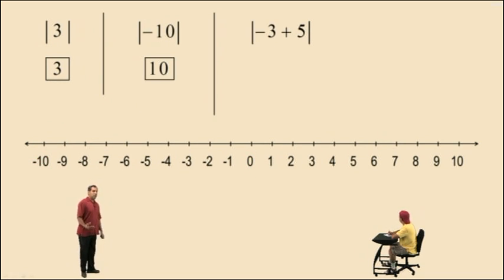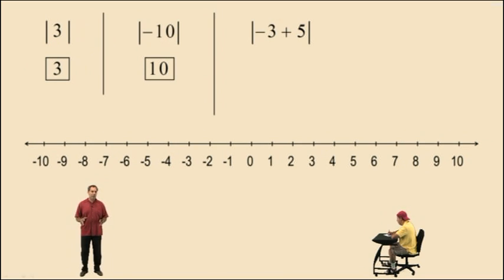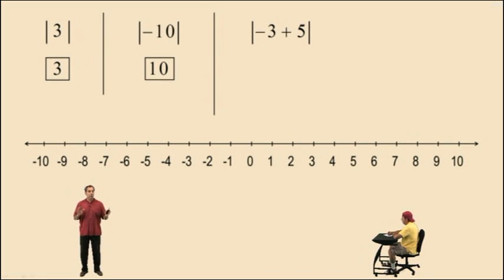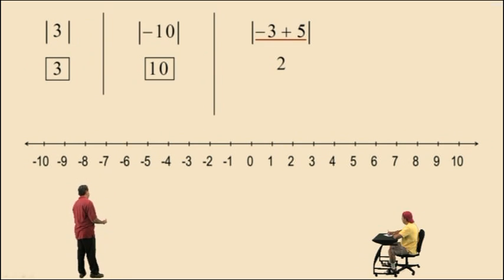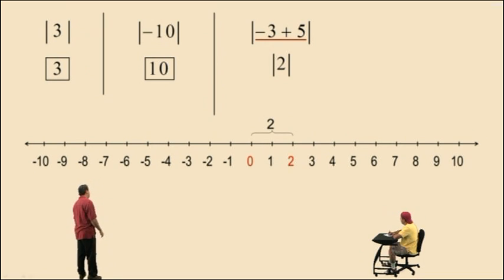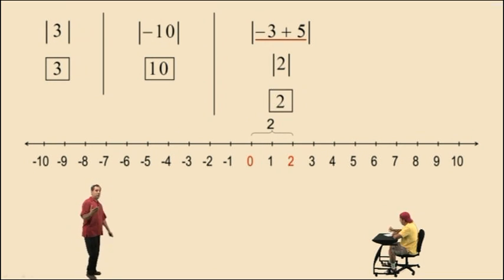Here we have the absolute value of the expression negative 3 plus 5. Earlier in the semester we were talking about order of operations, and the first category was parentheses and other grouping symbols. Absolute values fall in that first category — you treat them as parentheses. So we have to simplify the expression within the absolute value first. Negative 3 plus 5 is positive 2, and the absolute value of 2 is 2, because 2 is 2 units from 0 on the number line.